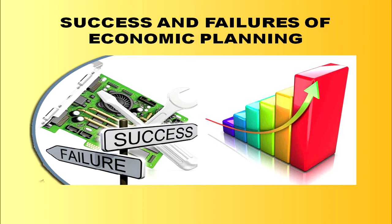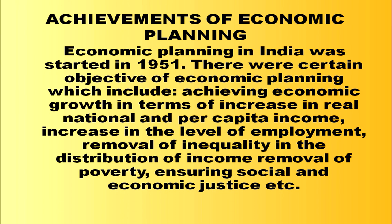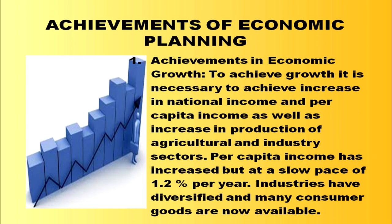Let us now understand the successes and failures of economic planning. Economic planning in India started in 1951 with objectives including economic growth in real national and per capita income, increase in employment, removal of inequality, removal of poverty, ensuring social justice, and modernization. The first achievement is in economic growth — per capita income has increased, though at a slow pace of 1.2 percent per year, and industries have diversified with many consumer goods now available.